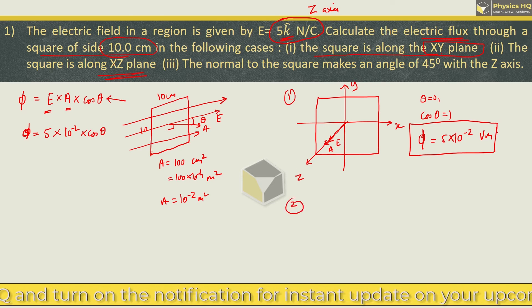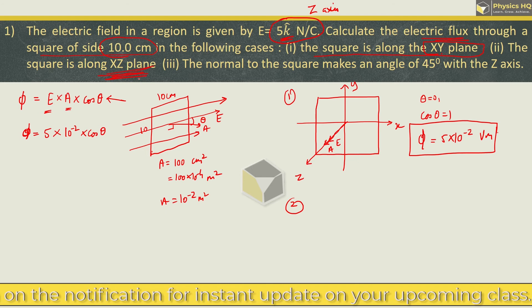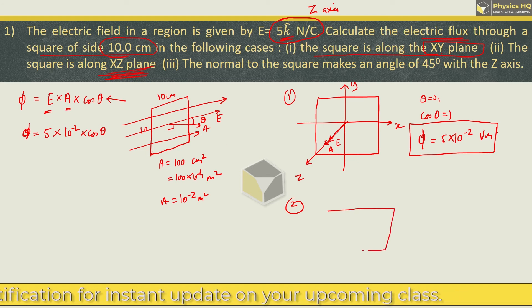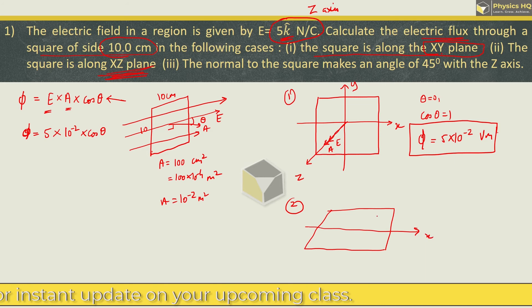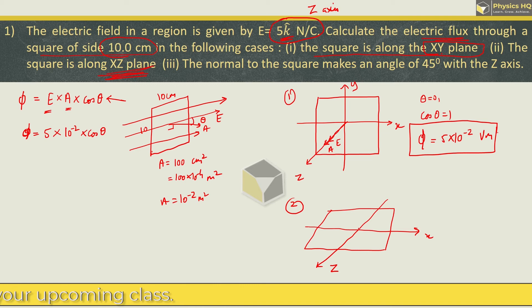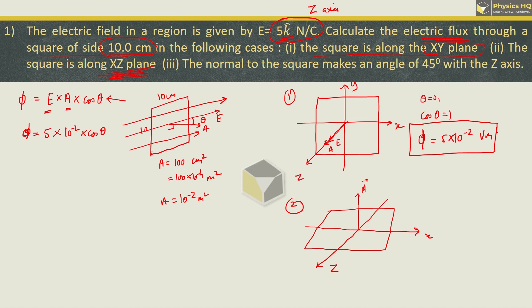Second case, they have said that the square is along the XZ plane, so it is somewhat horizontal like this. So, this horizontal axis is X, then Z axis. Now if I have an area vector, then I have to make the surface perpendicular, that will give me the area vector or surface vector. And the electric field is directed along the Z axis. So, the angle is 90 degrees, so theta in this case is 90 degrees, and we know that cos 90 is 0. So, how much flux will be here? Zero.